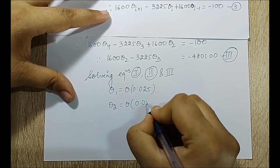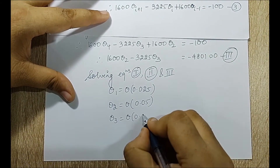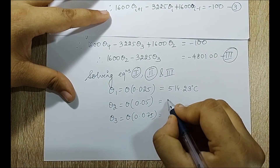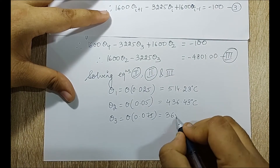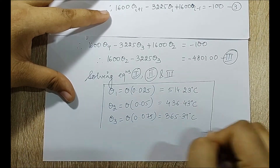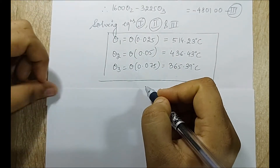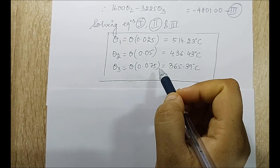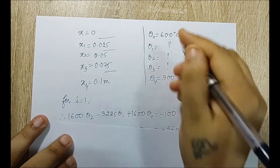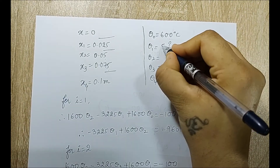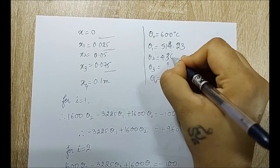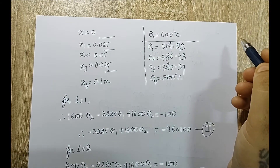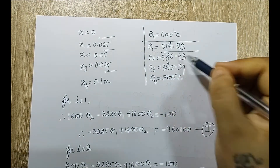Solving the system of equations, I obtain theta_1 equals 514.23 degree Celsius at x equals 0.025 meter, theta_2 equals 436.43 degree Celsius at x equals 0.05 meter, and theta_3 equals 365.39 degree Celsius at x equals 0.075 meter. These are the FDM results. Now I need to calculate the temperature at x equal to 0.02, 0.04, and 0.08 meters using interpolation from this table.